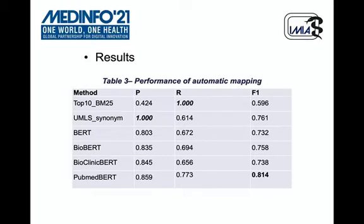On the other hand, exact matching to UMLS synonyms obtained the highest precision and a much lower recall of 0.614. Among the four pre-trained language models, fine-tuning PubMedBERT achieved the highest F-score of 0.814.